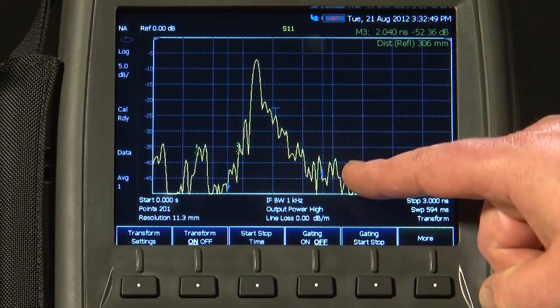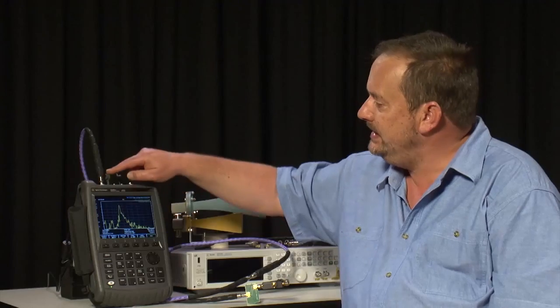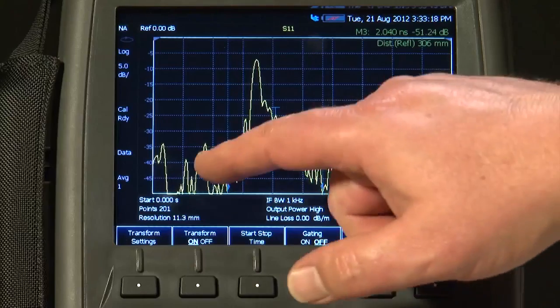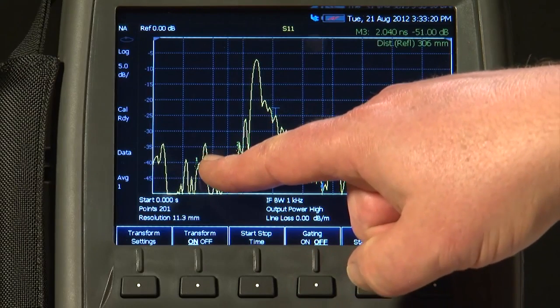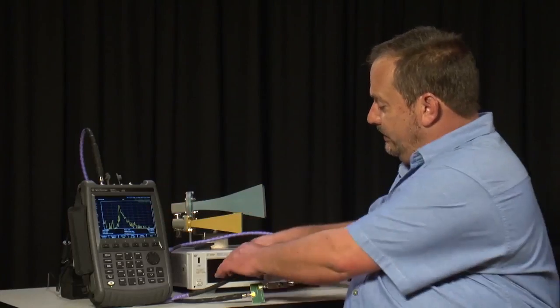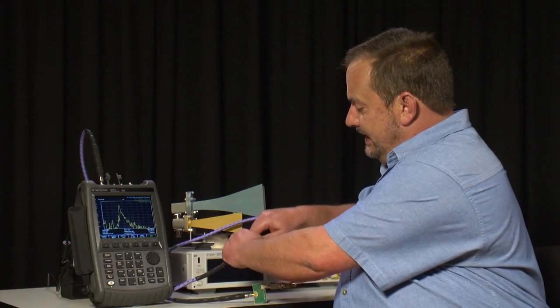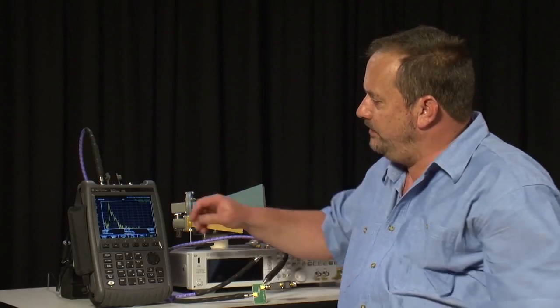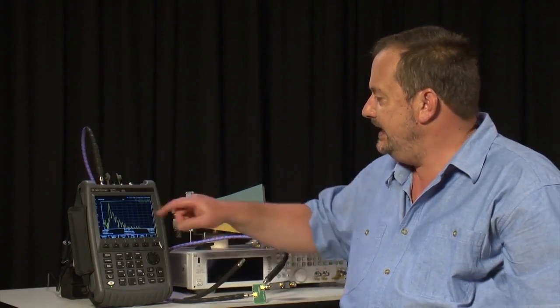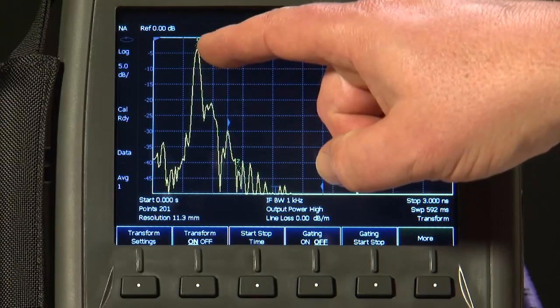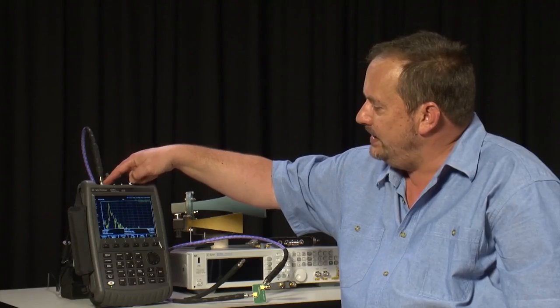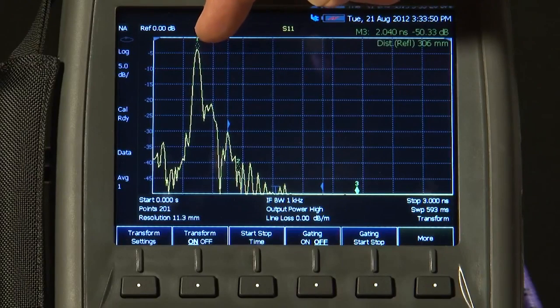Now if you're wondering what all these other bumps are on the trace, I can quickly show you this one here I know will be from the connector join here at port 1 on the analyzer. And this one here, which I've marked with marker 1, is going to be this join here, which I can quickly show you by separating the cables. That has created an open circuit on the end of this cable and you can see marker 1 is on that peak. So we know that that distance from the reference plane, port 1, is the length of this first purple cable.